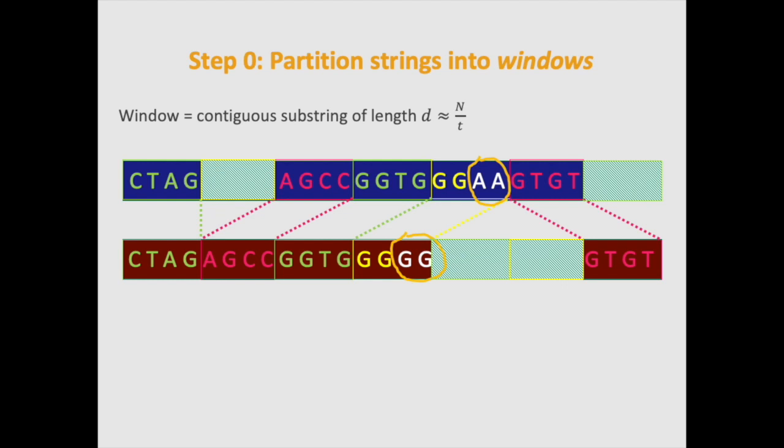So in this case, to go between the two strings, you can delete two windows, insert two windows, as well as change two characters within one pair of windows. So this gives a total cost of the matching of 18. This is what we mean by a window compatible matching.